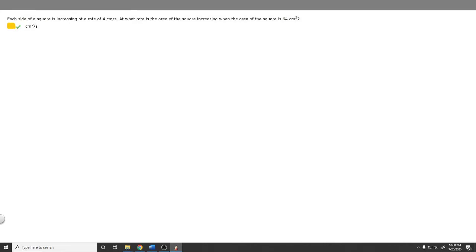So in this problem, we're told that each side of the square is increasing at a rate of 4 centimeters per second. And we're asked, at what rate is the area of the square increasing when the area of the square is 64 centimeters squared?